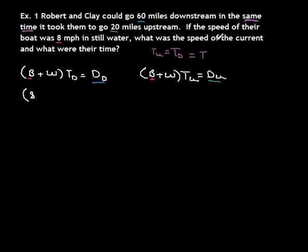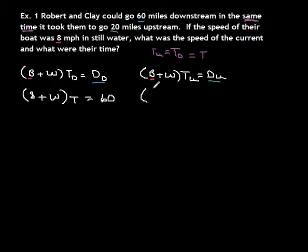We don't know the speed of the current, so we leave that as W. It says their times were the same, so we can replace the subscripted time variable with just T. Our distance downstream was 60 and the distance upstream was 20. We don't need subscripts on T since it's the same time.